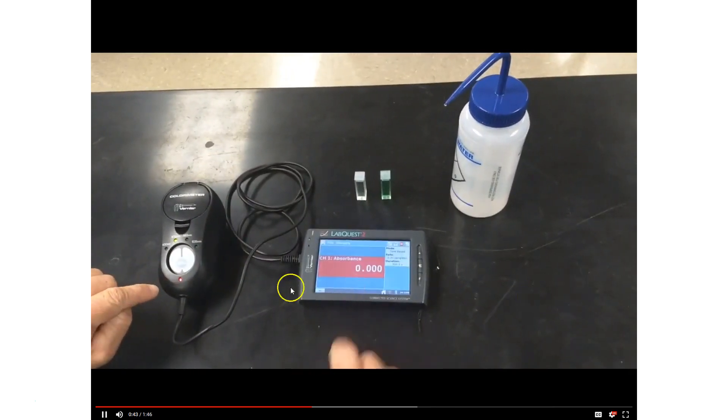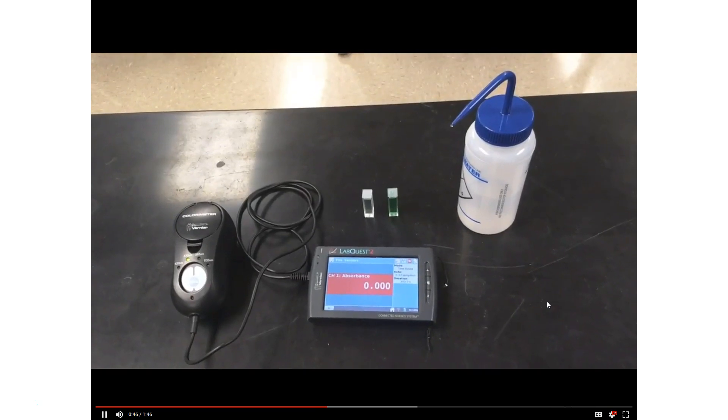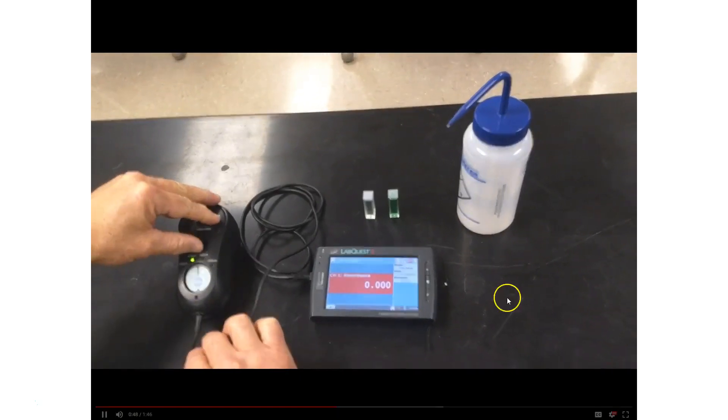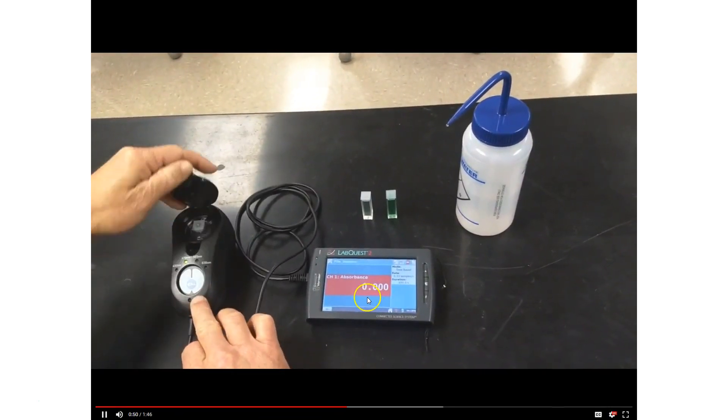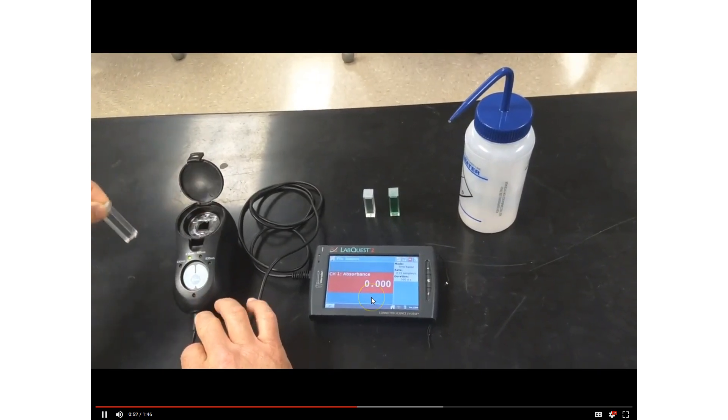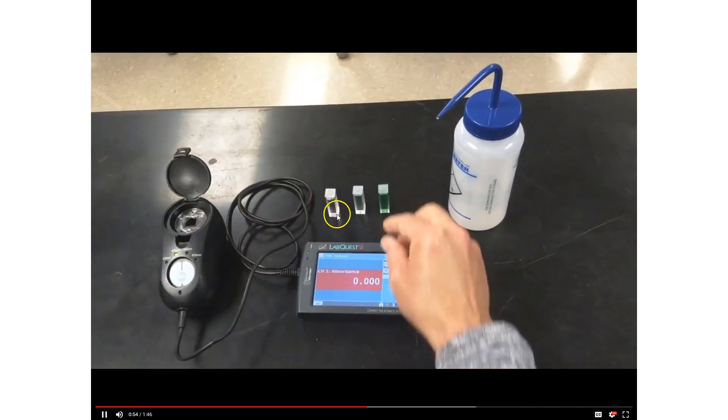To calibrate this, press and hold the cal button. It will re-zero the device, and now it's absorbing zero, which means all the light is transmitted through that sample. That's why we used distilled water to begin with.